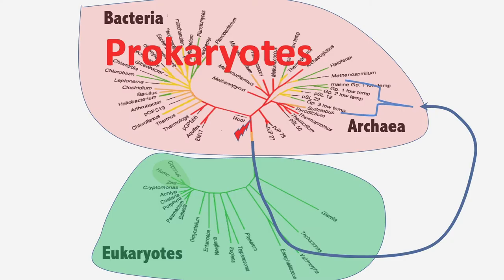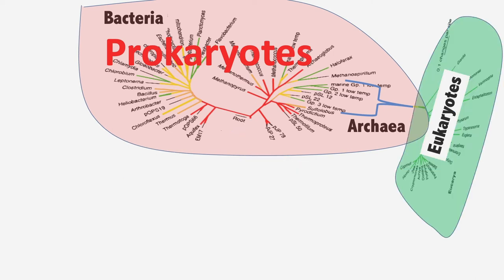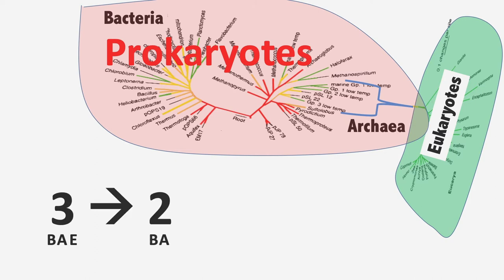But recently, we found that the eukaryotes are not a separate domain. Rather, they have emerged out of the archaea. The importance of this is hard to overlook. What we need to do is put the eukaryotes right there in the archaea. So three domains have turned into two — bacteria and archaea. And this is what the new phylogenetic tree looks like, where the eukaryotes in green are embedded within the archaea.